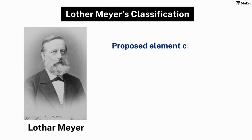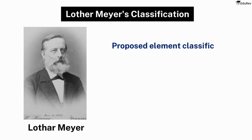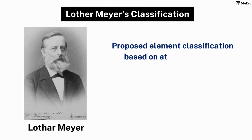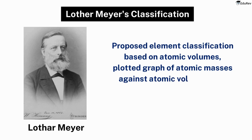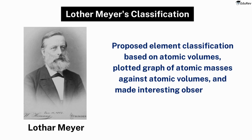How did Meyer come up with this classification? He determined the atomic volumes by dividing atomic mass with its density in solid states. He then plotted a graph between atomic masses against their respective atomic volumes for a number of elements and found some interesting observations.